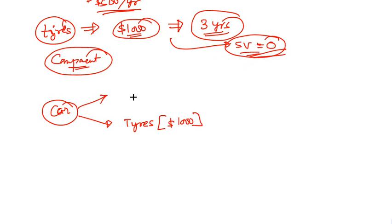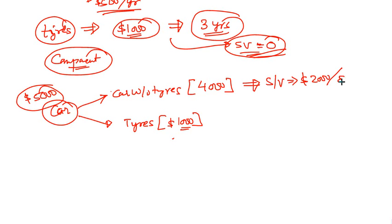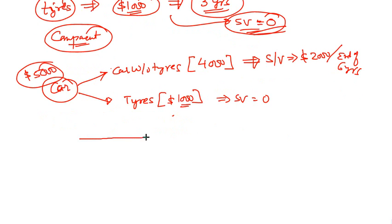The car without tires: since the car costs $5,000 total and tires cost $1,000, the car without tires costs $4,000 — because $4,000 plus $1,000 gives $5,000. The car without tires has a salvage value of $2,000 at the end of six years, while tires have a salvage value of zero. On a timeline: zero, one, two, three, four, five, and six.